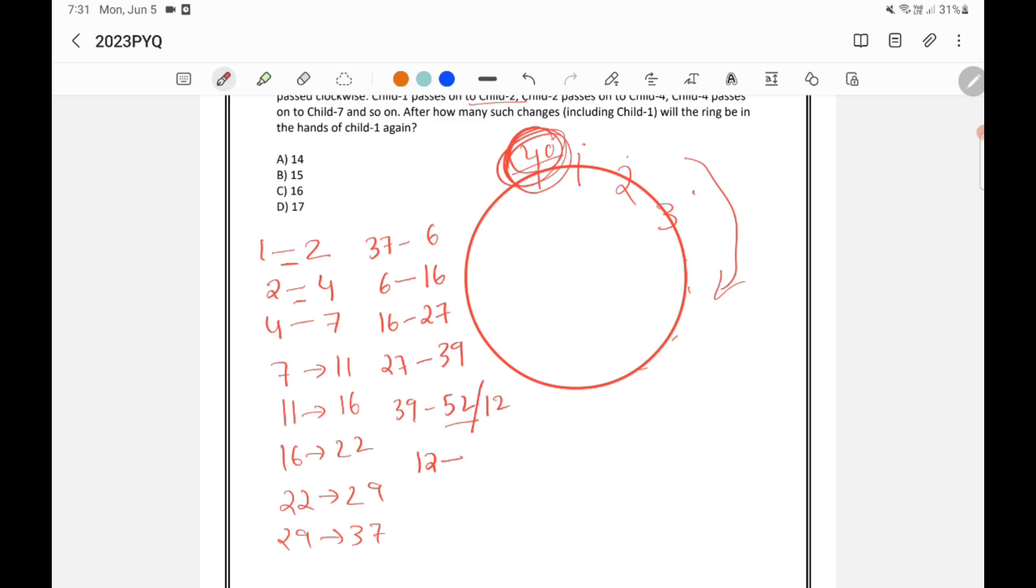From 12, we need to add 14. So that is 26. From 26, we need to add 15. So 26 plus 15 is 41. Again, we know that only 40 students are there. 41 means it is 1 itself. Now 1 got the ring.